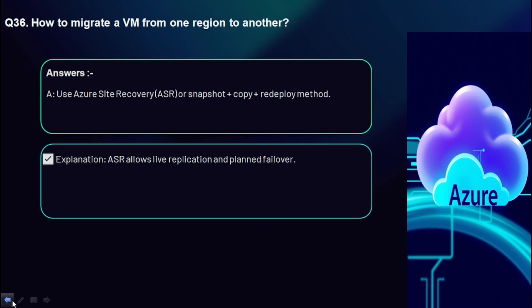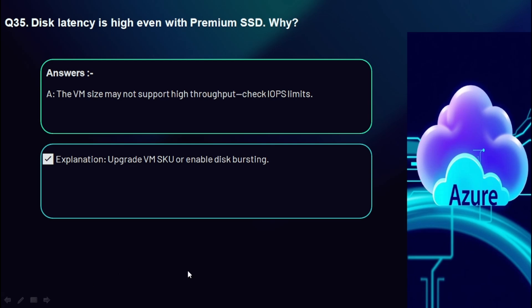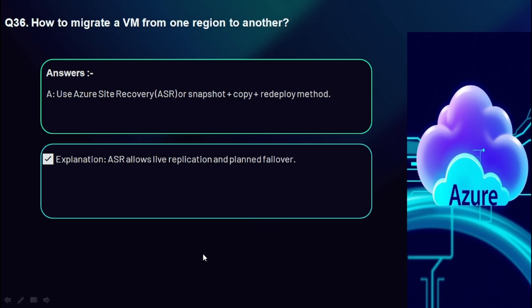Question 36: Disk latency is high even with Premium SSD — why? The selected VM size may not support the required disk throughput. Check the IOPS and throughput limits for your VM SKU. Review the maximum IOPS and throughput supported by your current VM size — if the application generates more I/O than the disk can handle, requests are queued leading to increased latency. Consider upgrading the VM SKU or enabling disk bursting if available.